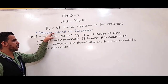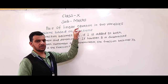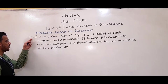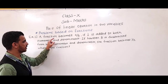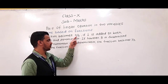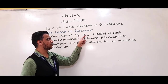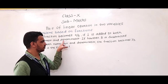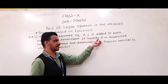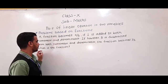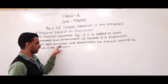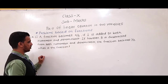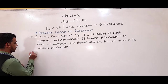Now, today we are going to learn problems based on fractions. So, the first example is: a fraction becomes 4 by 5 if 1 is added to both numerator and denominator. If however 5 is subtracted from both numerator and denominator, the fraction becomes 1 by 2. What is the fraction?